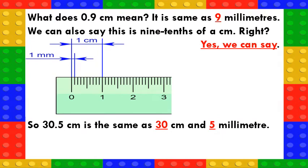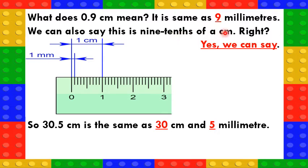Children, what does 0.9 centimetres mean? Here, 1 centimetre has 10 equal parts, so each part is 1 tenth of a centimetre. 1 tenth of a centimetre is called 1 millimetre. So, 0.9 centimetres is the same as 9 millimetres. We can also say that this is 9 tenths of a centimetre. So, 30.5 centimetres is the same as 30 centimetres and 5 millimetres.